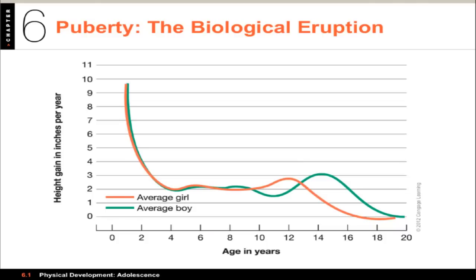By the end of the adolescent growth spurt, girls have grown approximately 13 inches, while boys have grown about 14 and a half — these are averages. During the teenage years, some parts of the body grow at different rates; for instance, feet or hands may grow faster. This unequal growth pattern is called asynchronous growth, meaning not synchronized.